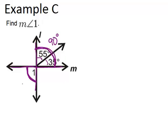So that means, because of vertical angles, angle 1 is again going to be 90 degrees.